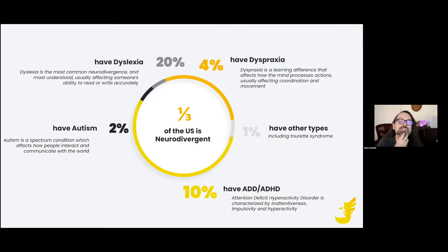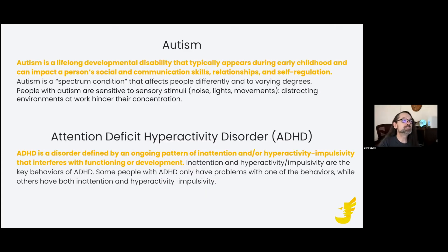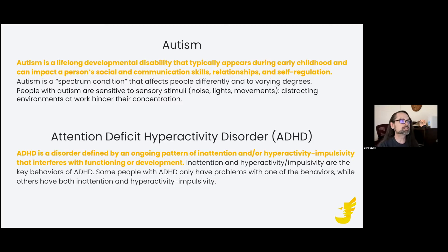I strongly suspect not just the U.S. population, but human populations in general — probably about a third of them are in some shape or form neurodivergent. Autism is a lifelong developmental disability. It typically first starts to become apparent in early childhood, and it can impact a person's social and communication skills, relationships, and self-regulation. It is a spectrum condition.